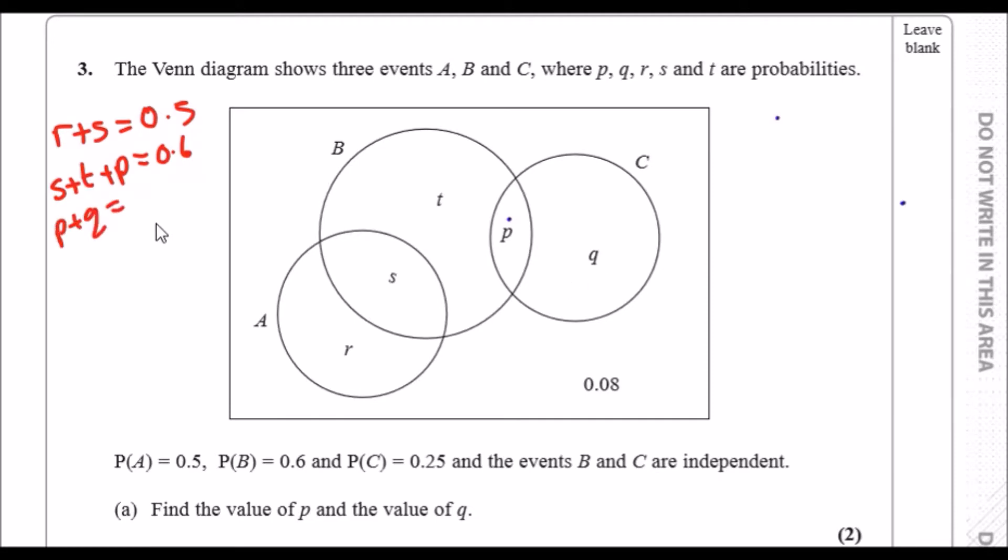We can also know a couple things. It says the events B and C are independent. When they tell you this, it instantly refers to the statement that the probability of B times the probability of C must equal the intersection point. So probability of B times probability of C equals the intersection point, in this case p here.